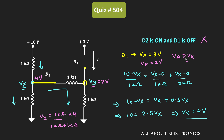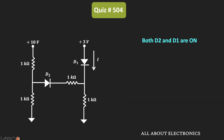From this analysis, we can conclude that for the given circuit, both diodes D1 and D2 are in the ON condition. Since both are ideal diodes, both will now act as short circuits. Let us now find the current through diode D1.